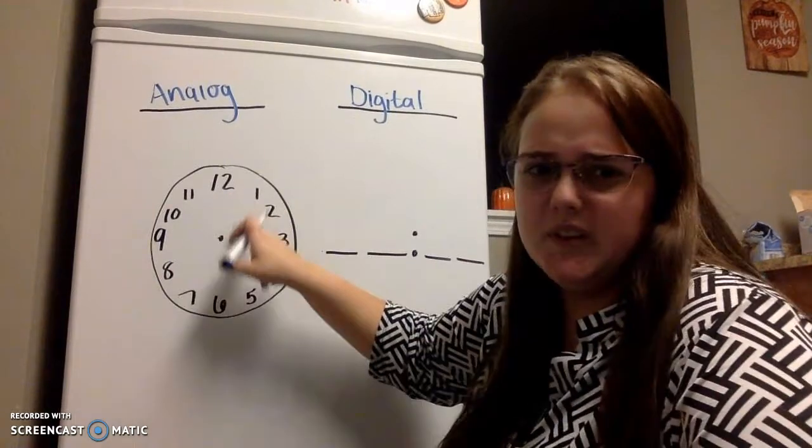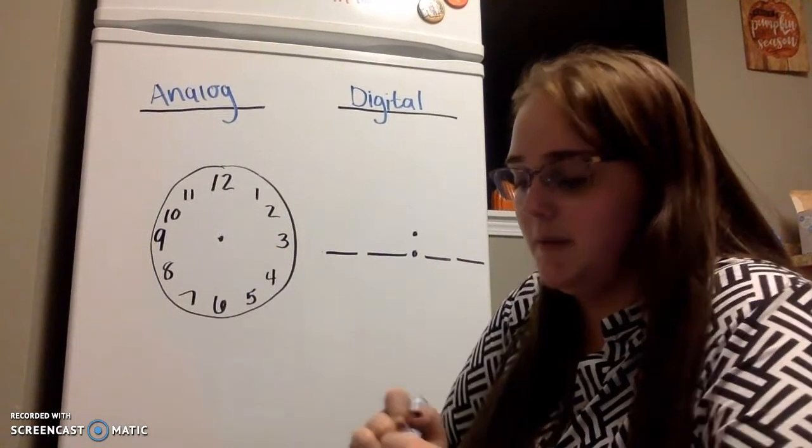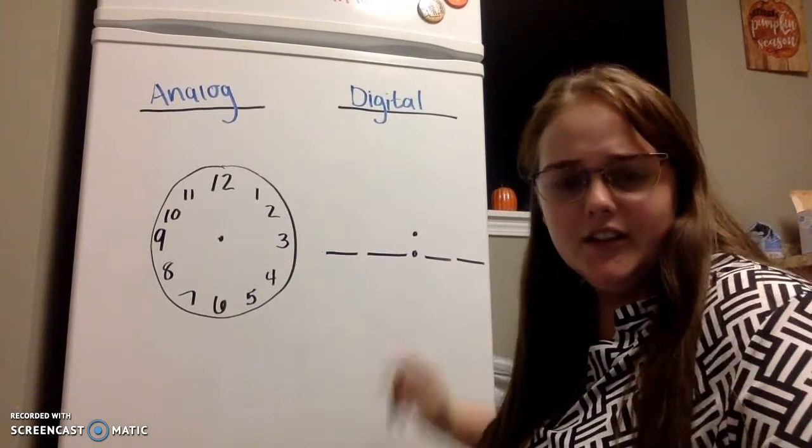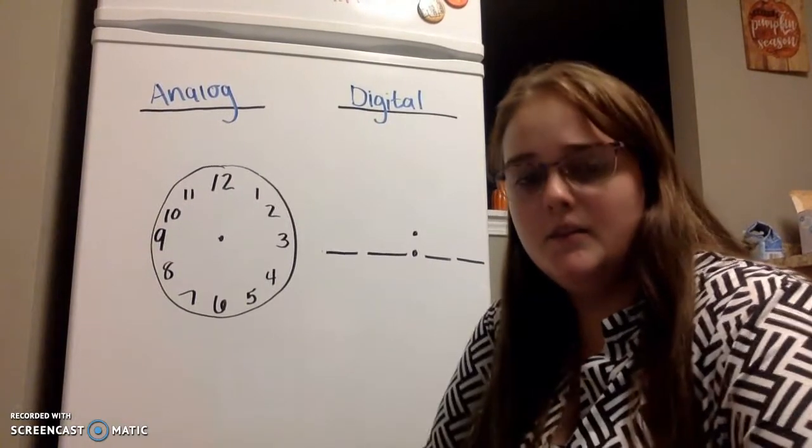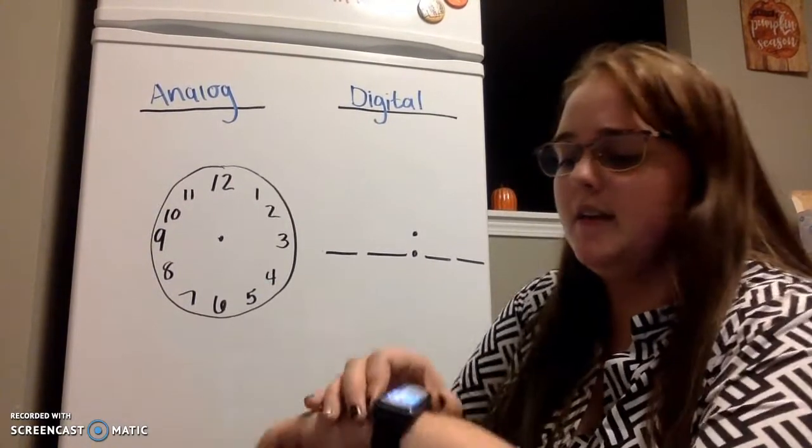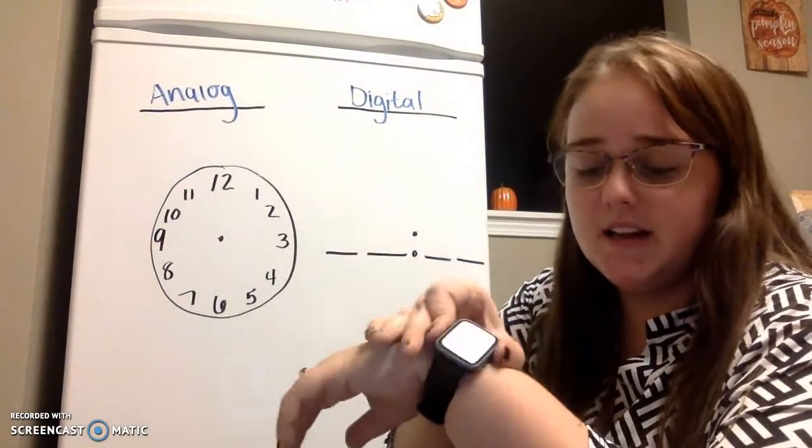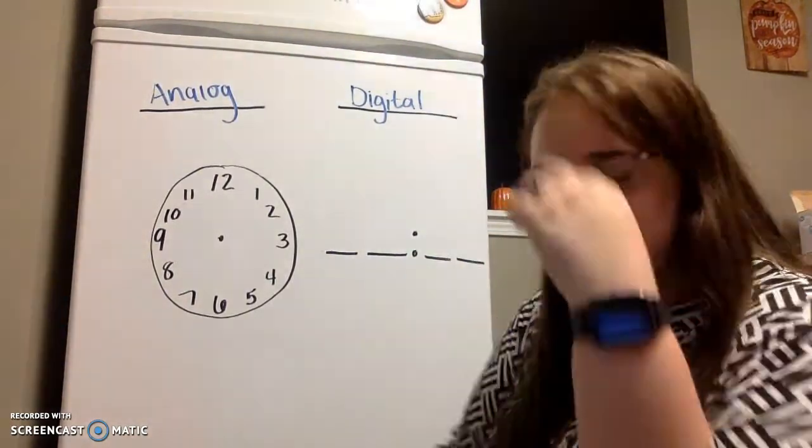So we already said we see a clock like this in our classroom or maybe at your house. Where do you see a clock that looks like that? Maybe on like one of your parents' phones or like Miss AI's watch has that on there. It's got the funny little colon in it.